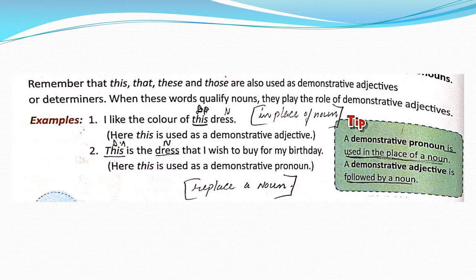The first rule is that demonstrative pronouns always identify nouns, whether those nouns are named specifically or not. For example, 'I can't believe this.' Here, we have no idea what 'this' is, but it's definitely something the writer cannot believe — it exists even though we may not know exactly what it is.